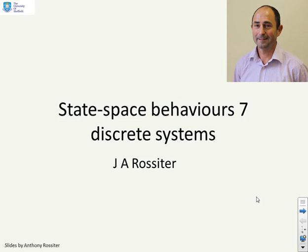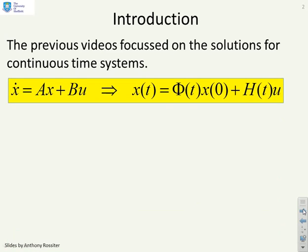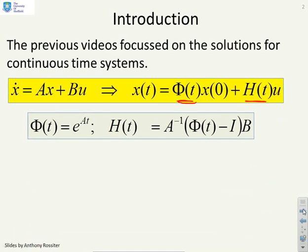This video looks at the behaviors of discrete systems. Previous videos have focused on the solutions for continuous time systems. So we had systems of the type ẋ = Ax + Bu, and we showed that you could find a state transition matrix Φ(t) and a step response matrix H(t), which had definitions like this.